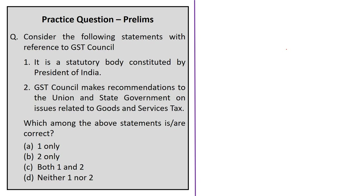Looking at the practice question: two statements are given. The first statement says the GST Council is a statutory body constituted by the President of India — this is incorrect, as it is a constitutional body. The second statement says the GST Council makes recommendations to the union and state governments on issues related to goods and services tax — this is correct. Also note that the definition of 'state' includes union territories with legislatures. The correct answer is option B.